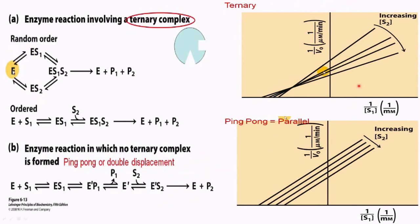In the Lineweaver-Burk plot, in case of ternary complex, we see the interception and the reciprocal plot will be in this form. Whereas in case of ping-pong, parallel lines will be seen, no interception will be seen in this. This is the difference between the ternary complex and a ping-pong complex or double displacement complex.